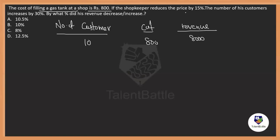Right now, what is happening? The cost is reduced by 15%. So how much is 15% of 800? The cost is going to be reduced by 120 rupees. So from 800, if I reduce 120 rupees, the new cost here is 680 rupees.